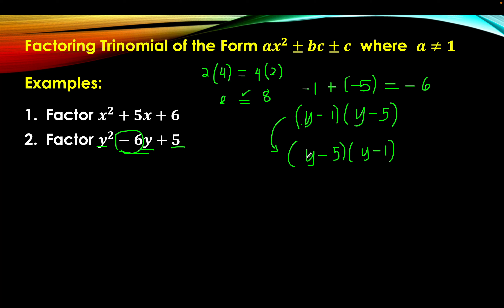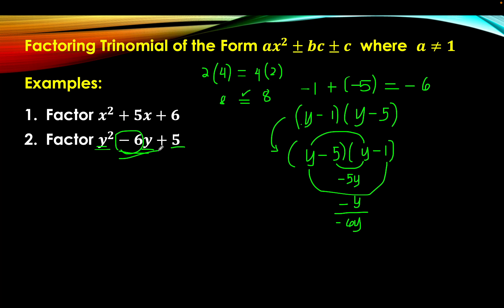Step 4: verify whether we have the correct factor. y times y gives y squared. The middle term is the sum of the product of the outer and inner terms: negative 5 times y gives negative 5y, and y times negative 1 gives negative y. When added, we have negative 6y — correct. And the last term: negative 5 times negative 1 gives positive 5. That's example number 2.